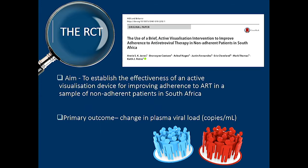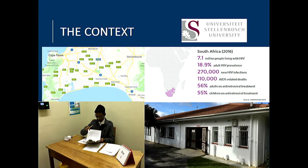Moving on to the randomized controlled trial, this was a study conducted in South Africa. We wanted to use this device to see if we could improve adherence within a group of non-adherent patients. Our primary outcome measure was change in viral load, which we measured from patients' blood tests — viral load should decrease as patients are more adherent to their treatment. We conducted this study in collaboration with Stellenbosch University, about 30 minutes outside of Cape Town. The clinics we were working in are quite different to what we might see in New Zealand. South Africa has a very large HIV epidemic, and the number one reason for treatment failure is actually non-adherence to treatment.